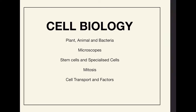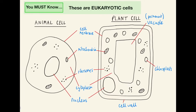Starting off we have animal and plant cells. These are called eukaryotic cells and you must 100% know everything about them. An animal cell and a plant cell have lots of similarities — both have a cell membrane, mitochondria, ribosomes, cytoplasm and nucleus. The plant cell also contains a permanent vacuole, chloroplasts and a cell wall. In terms of exam questions, they may often ask you the similarities and differences between these two cells, so always be prepared for those types of questions.